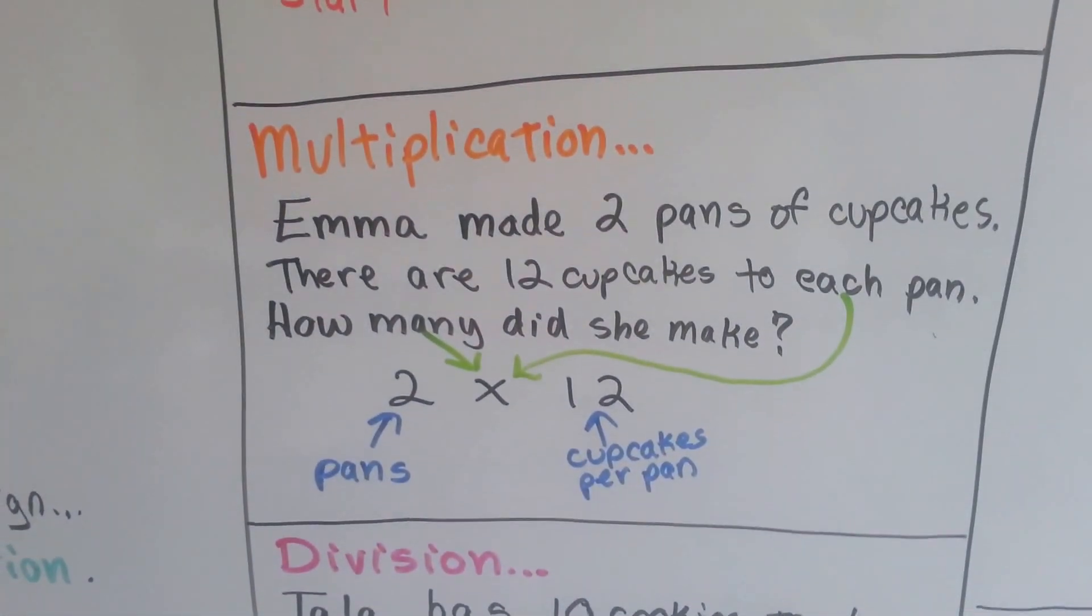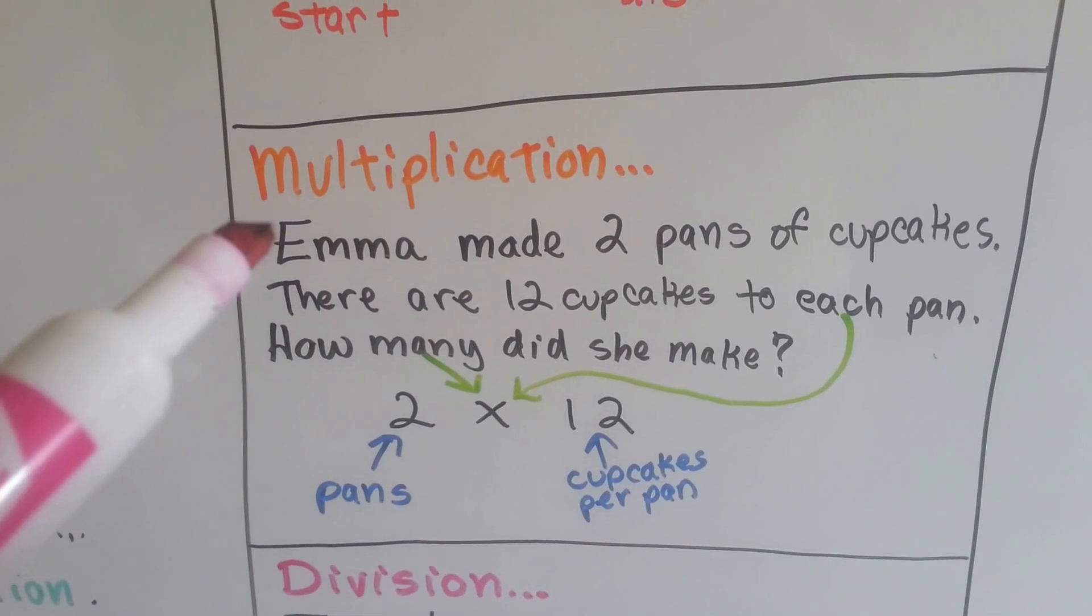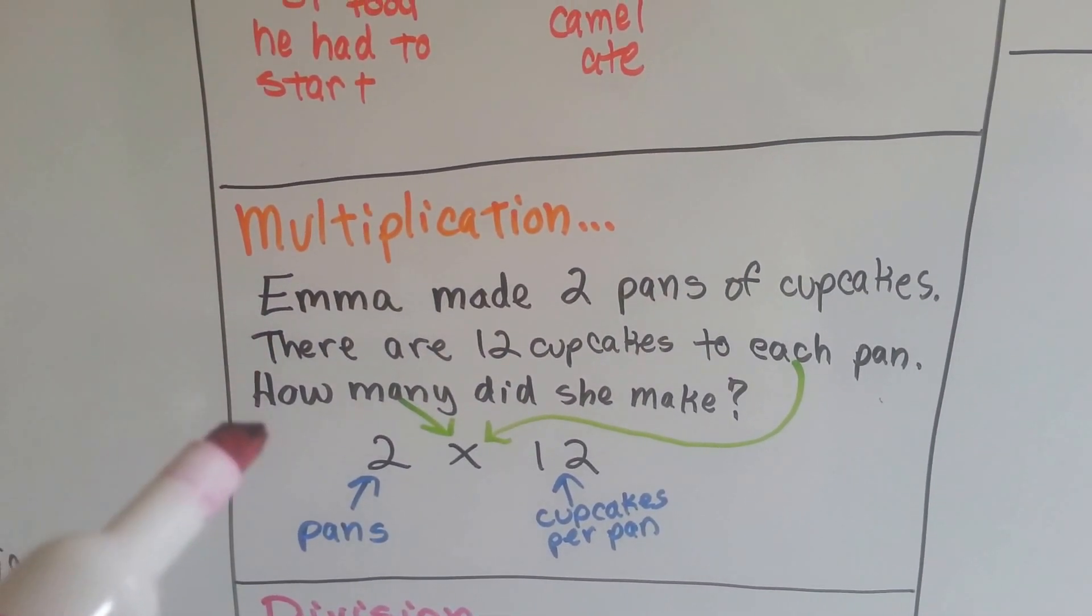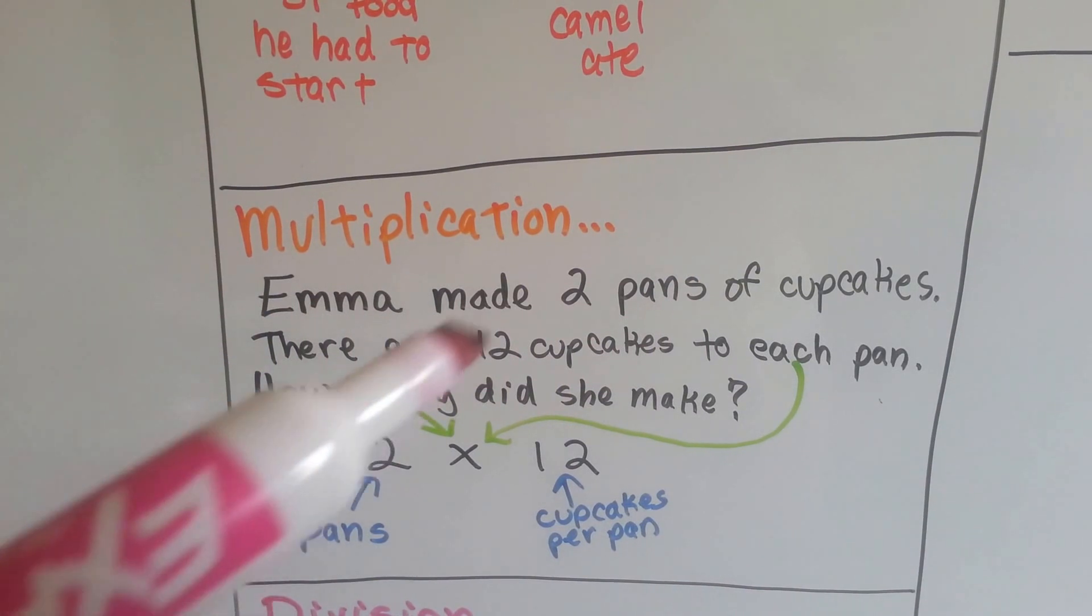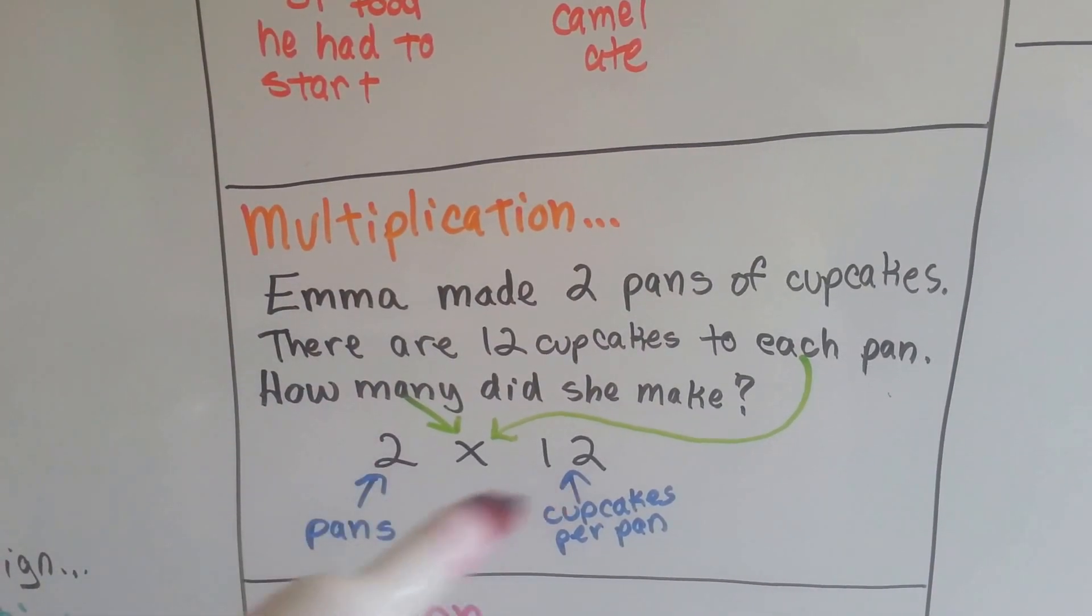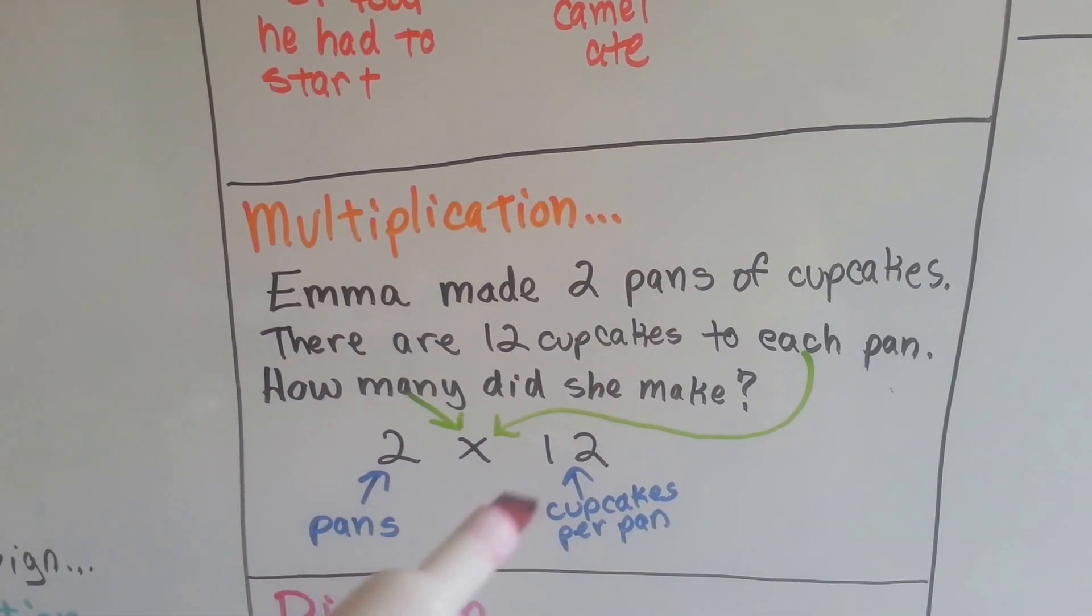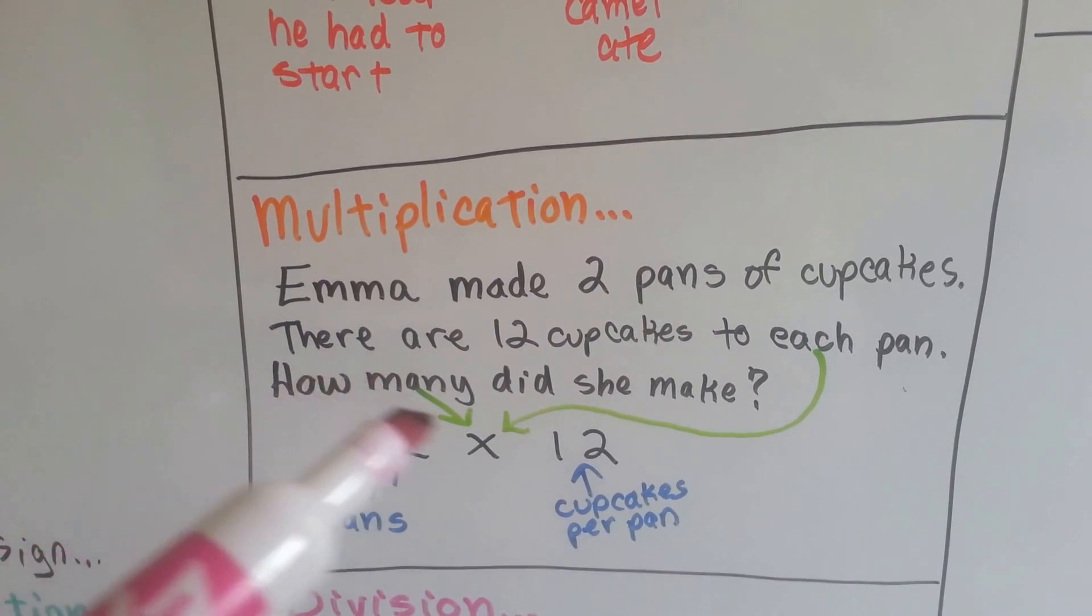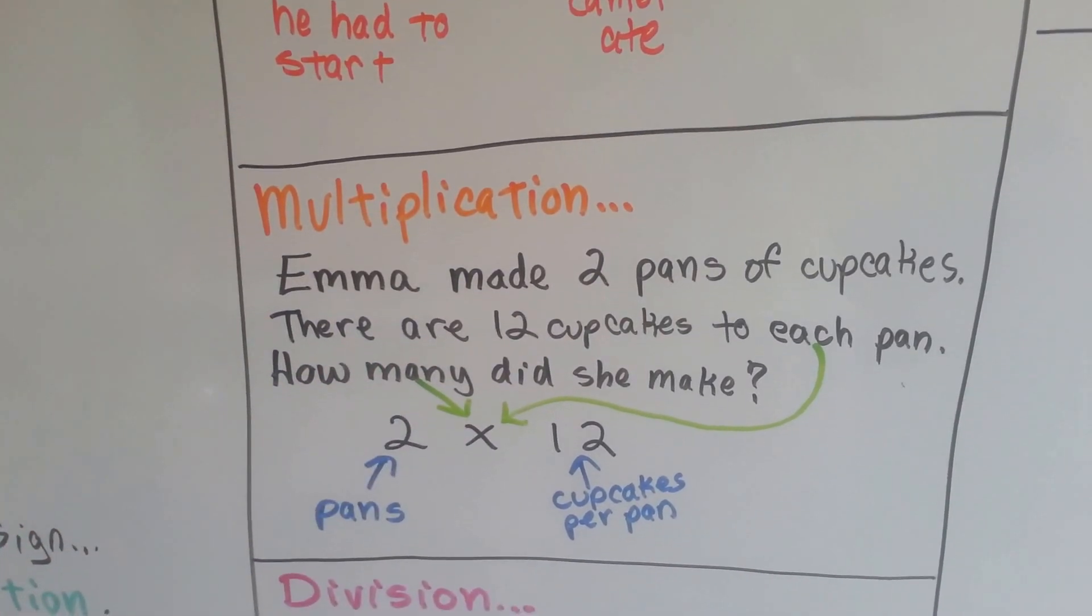We can do a multiplication story. Emma made 2 pans of cupcakes. There are 12 cupcakes to each pan. How many did she make? 2 pans, 12 cupcakes to each pan. 2 times 12. 2 pans, 12 cupcakes per pan. And the fact that it said each and how many told us that we had to multiply. See?